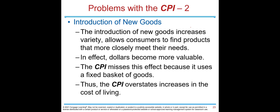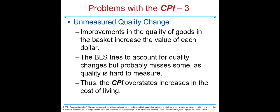The second problem is the introduction of new goods. New goods increase variety, giving consumers more choices and substitutes. In effect, your dollars become more valuable, but CPI misses this because it uses a fixed basket — so CPI overstates increases in the cost of living. Third, unmeasured quality change: improvements in the quality of goods increase the value of each dollar. The BLS tries to account for quality changes but probably misses some, since quality is hard to measure. Thus CPI overstates increases in the cost of living.